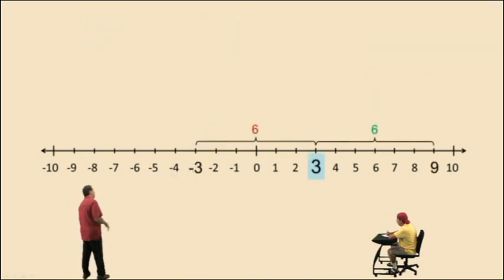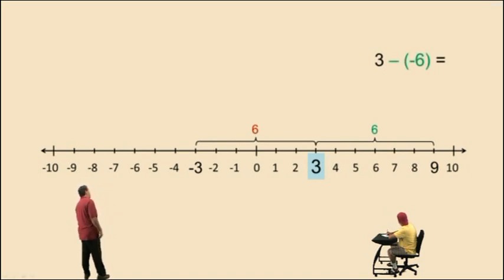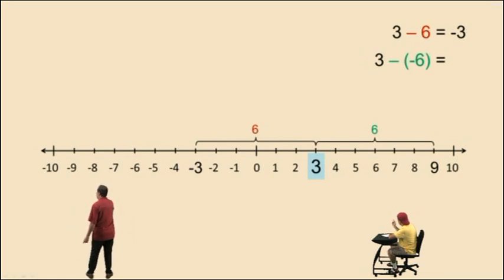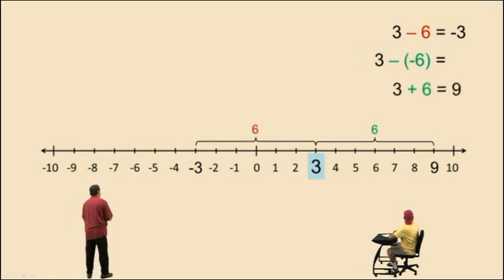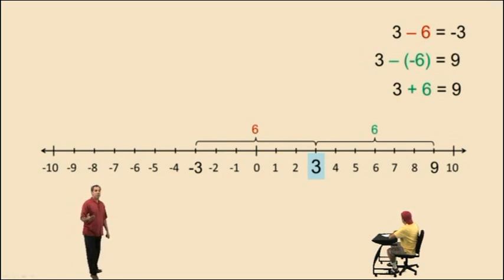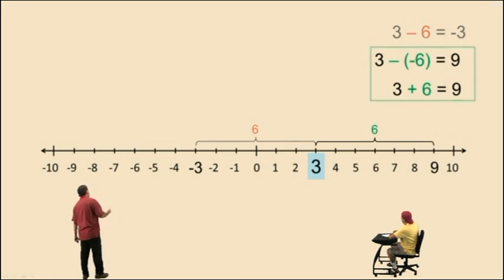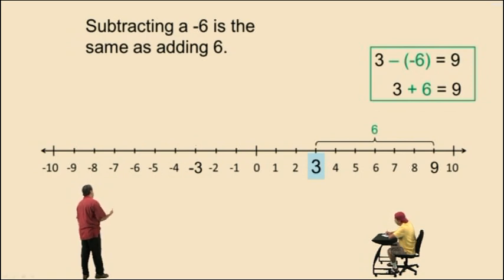Let's take a look at a different type of problem. Here's three subtract negative six. Well, three subtract a positive six means move to the left six units — that will be negative three. And three plus a positive six will be nine. Three subtract a negative six — well, it's got to be nine. It's got to be the same as adding a positive six, because we saw earlier, subtracting a negative six should be the same as adding a positive six. So let's summarize that: subtracting a negative six is the same as adding a positive six. Both answers will be nine.